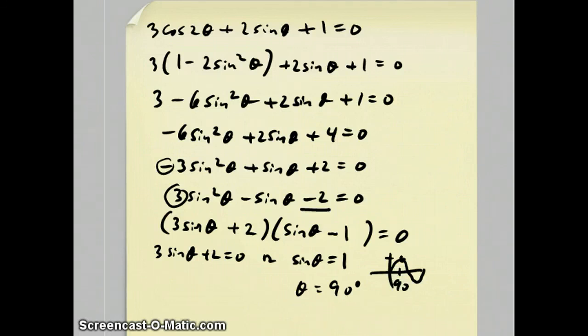This other one's a little tricky. We end up with sine theta equals negative 2 thirds. That's going to lead us to two answers. The first of the answers you do by finding what's called the reference angle, by doing the sine inverse of regular 2 thirds.